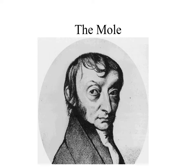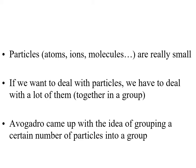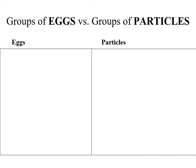The mole. The particles we're talking about could be atoms, could be ions, could be molecules, or even formula units making up some sort of ratio. But these particles, whatever they are, are very small. So if we want to work with them, we're going to have to work with a lot of them. Avogadro came up with the idea that grouping a certain amount of these particles into a particular group would be helpful in dealing with them in chemistry to work through our chemical reactions — hence the mole.